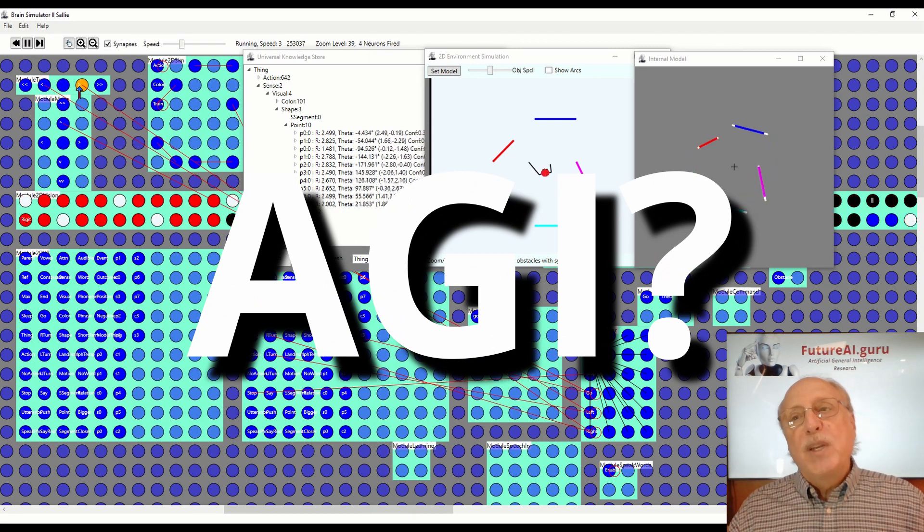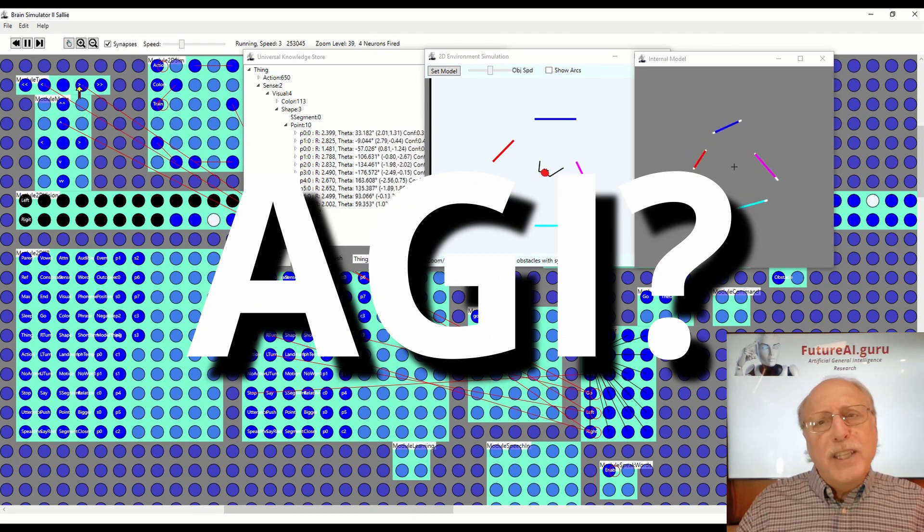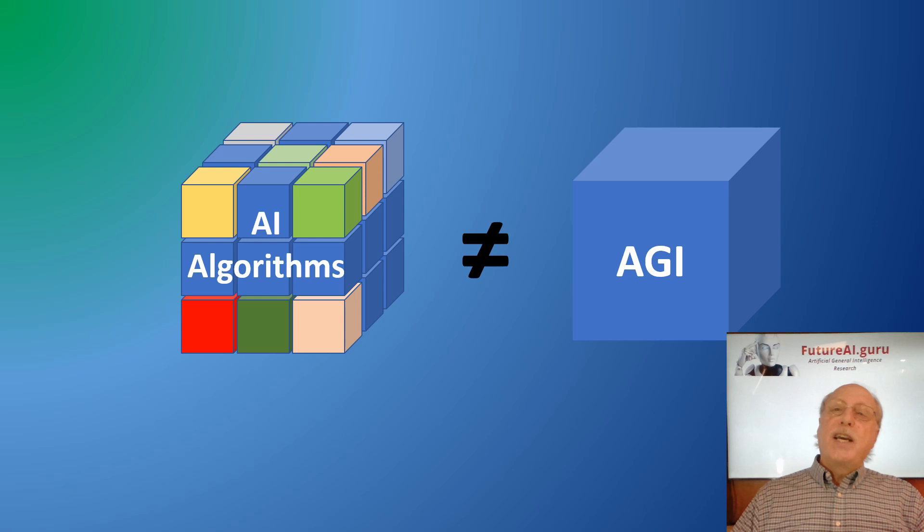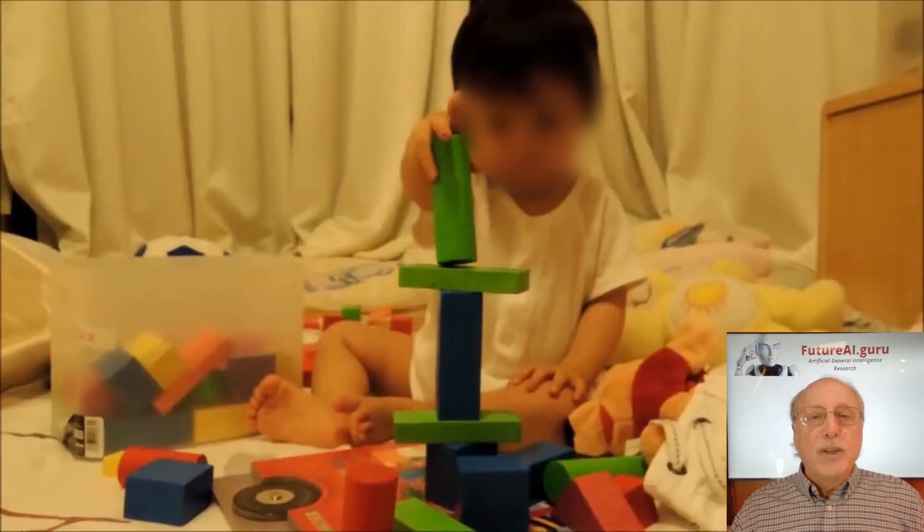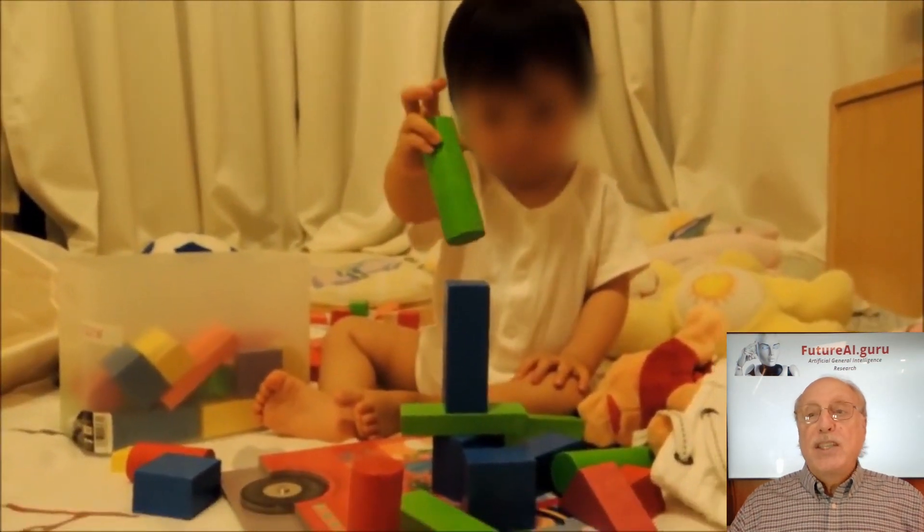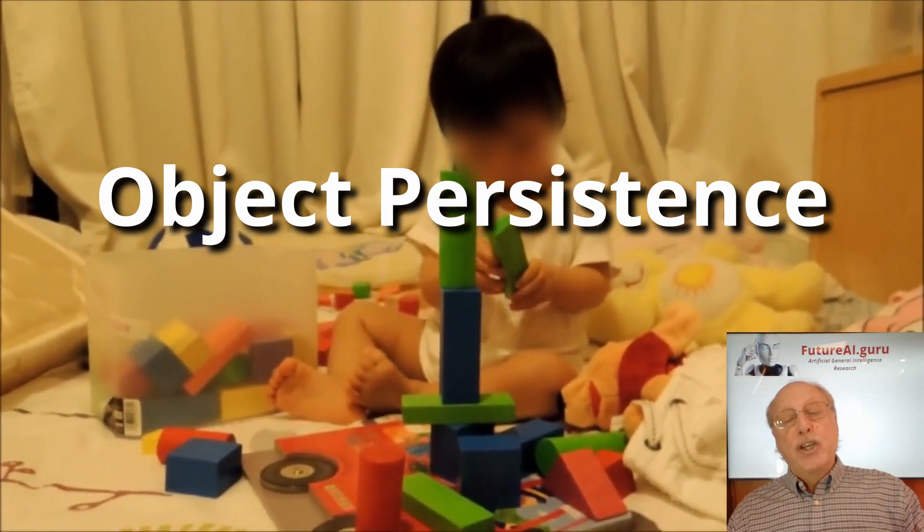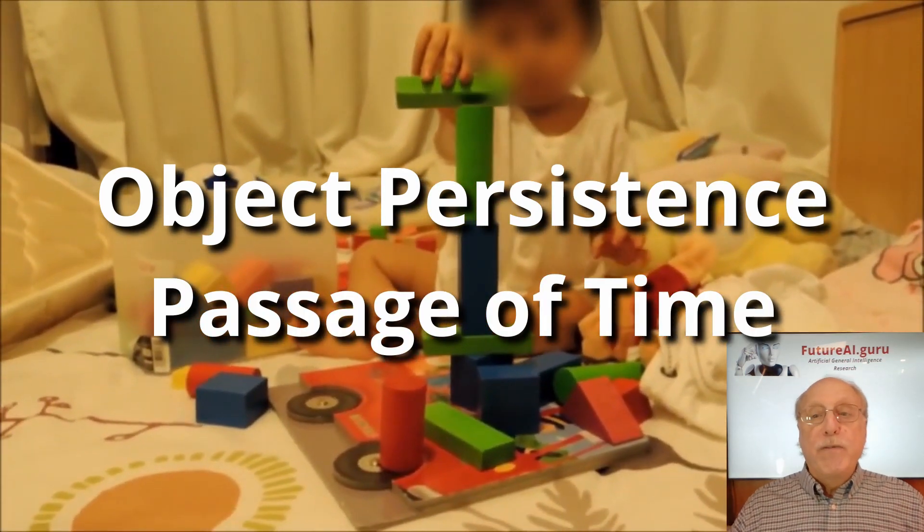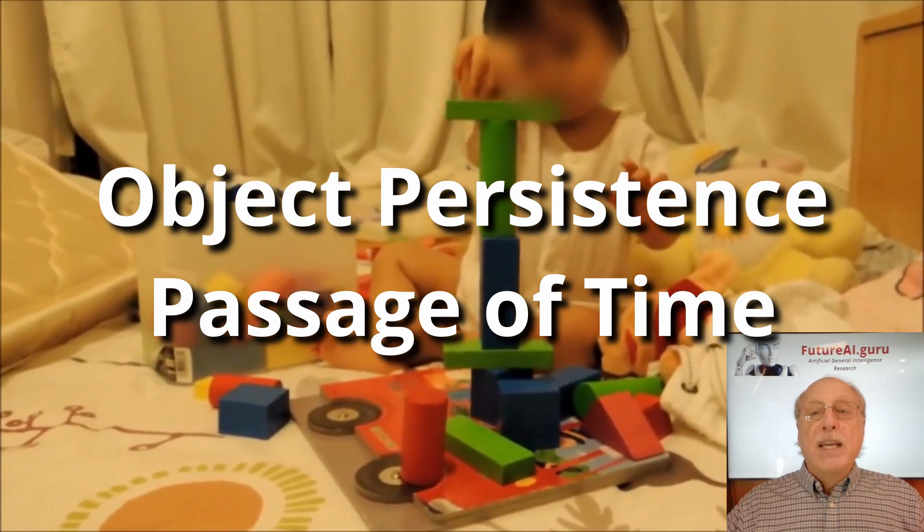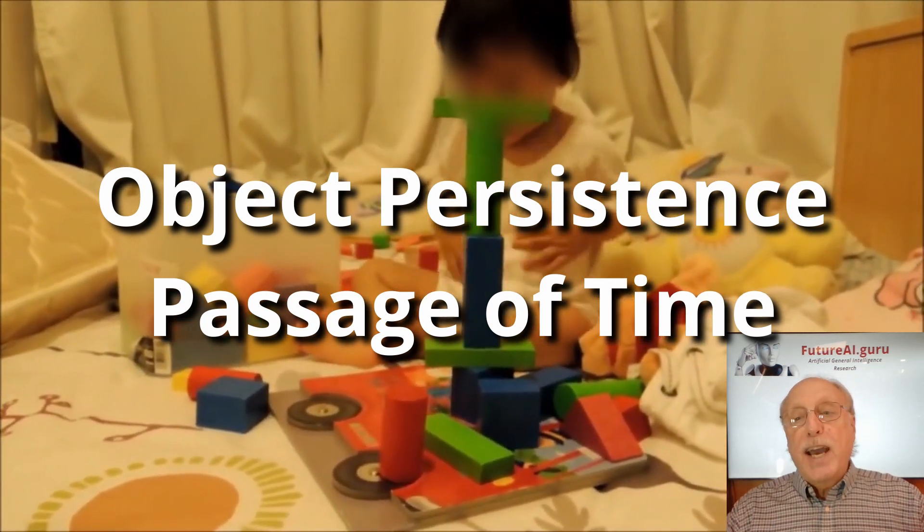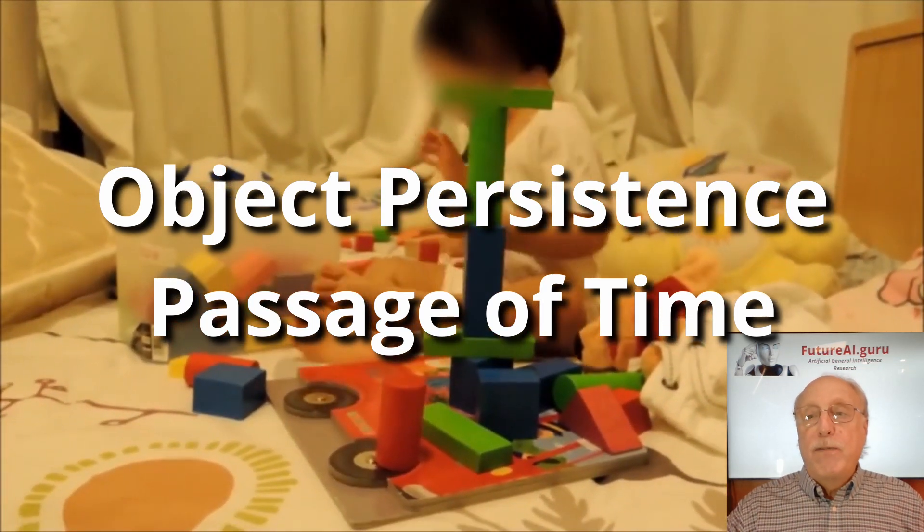What does the Brain Simulator have to do with artificial general intelligence? Today's AI falls short of AGI and many of the missing components are things any three-year-old can do. Playing with blocks, Sally can comprehend that physical objects are solid and persist in reality. She knows that causes lead to effects over the passage of time. She understands that a stack must be built before it can fall down.